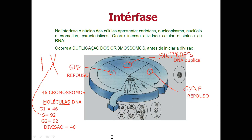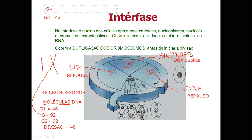Eu tô falando isso porque vai aparecer exercício assim. Por exemplo: uma célula tem, no período G2, 42 moléculas de DNA. Como no G2 já duplicou — o S que duplica — ela vai ter 42 também no S. E no G1, que não duplicou ainda, ela tem a metade de moléculas: 21. Então sempre associa: o G1 não duplicou ainda as moléculas de DNA; no S duplica; no G2 mantém. São três fases da intérfase: G1, S, G2.